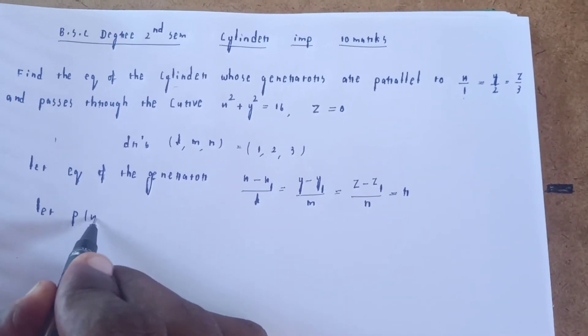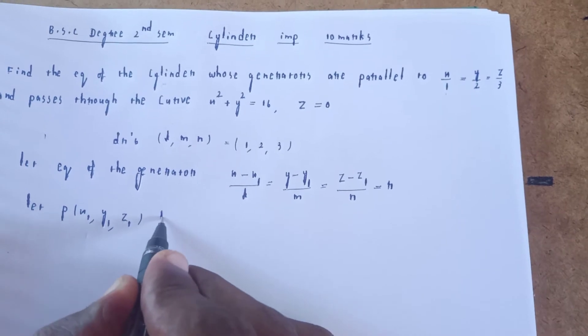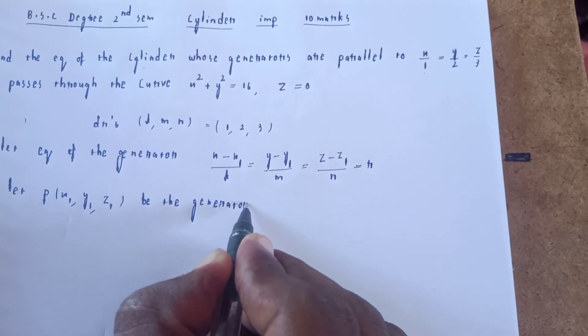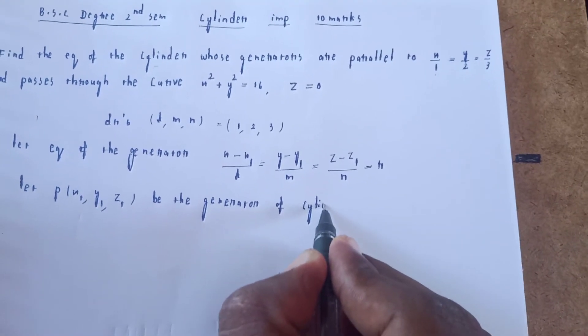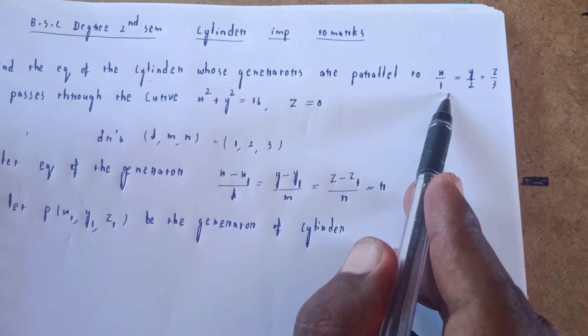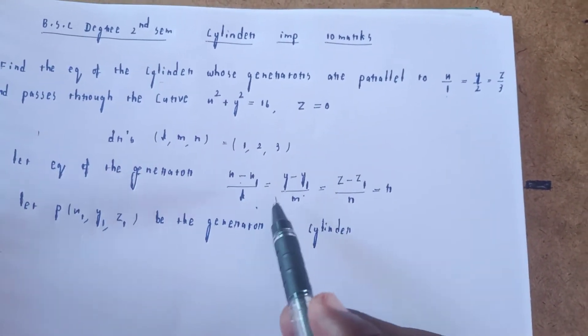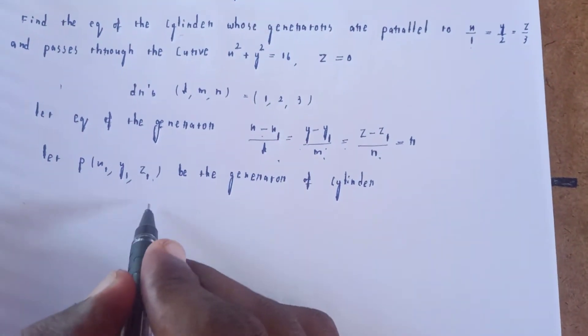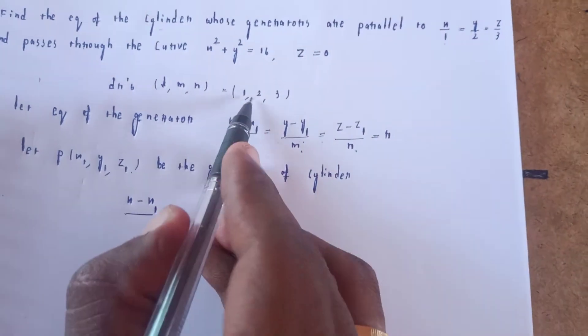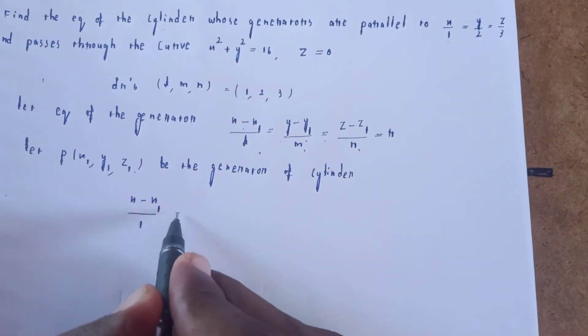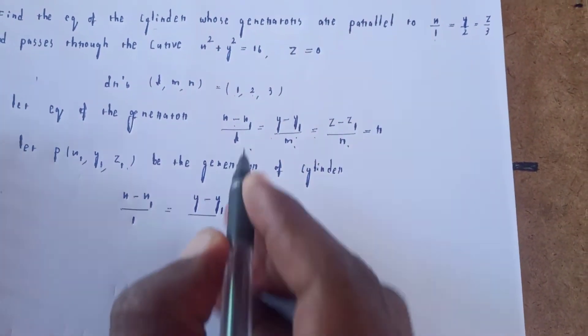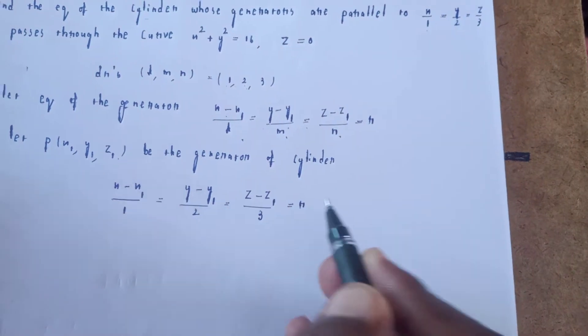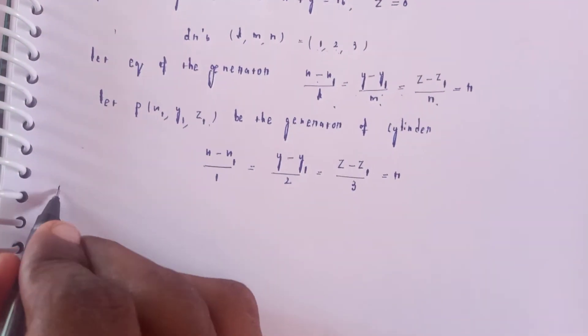Let P(x₁, y₁, z₁) be the generator of the cylinder. Given l, m, n, we have (x - x₁)/1 = (y - y₁)/2 = (z - z₁)/3 = r. The given equation is x² + y² = 16, z = 0.